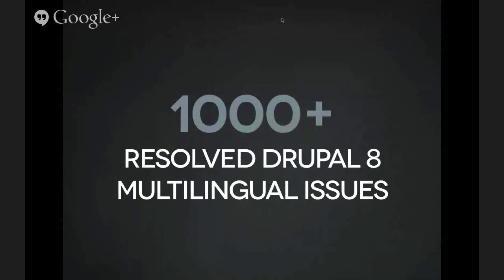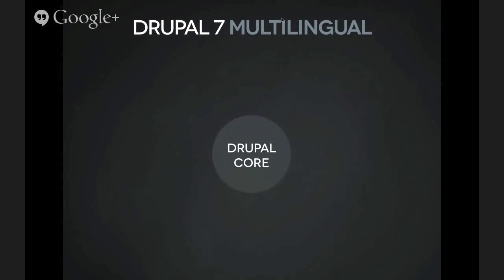We are almost at 1,000 resolved Drupal 8 Multilingual issues, which is pretty amazing. We looked at Drupal 7 Multilingual as a system and wanted to resolve systematic problems one by one with general solutions. We also broke solutions down into smaller pieces so we could involve more people, make progress without big bike-shed discussions, and reach successful ends.